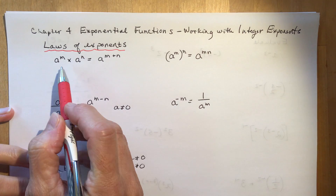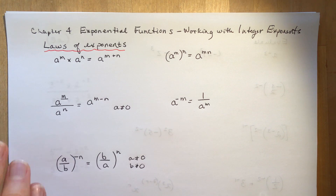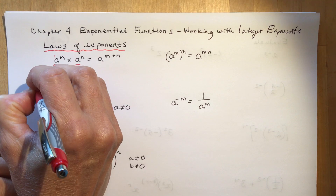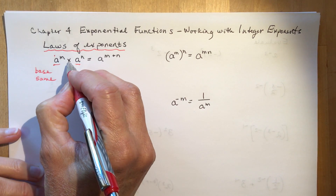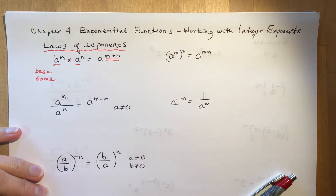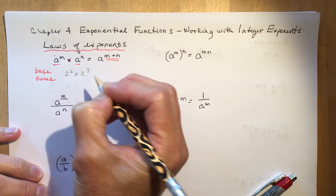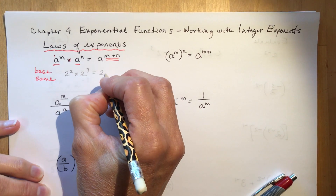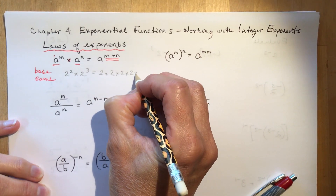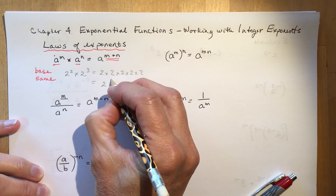The first law: a to the m times a to the n is a to the m plus n. That means if the bases are the same and you're multiplying, then you add the exponents. For example, two squared times two cubed — if you expand that, you have two times two, times two times two times two, and you get two to the power of five.